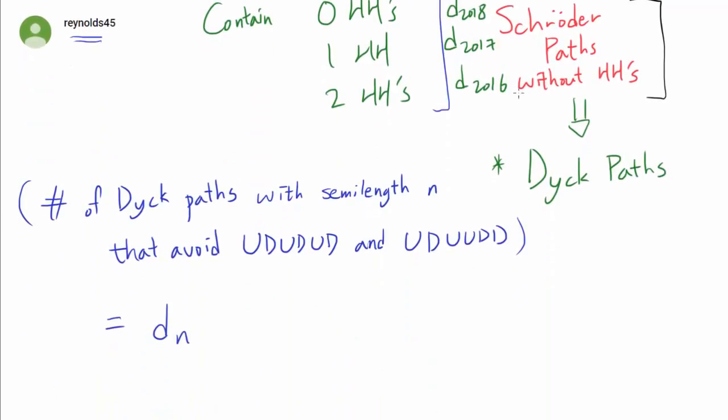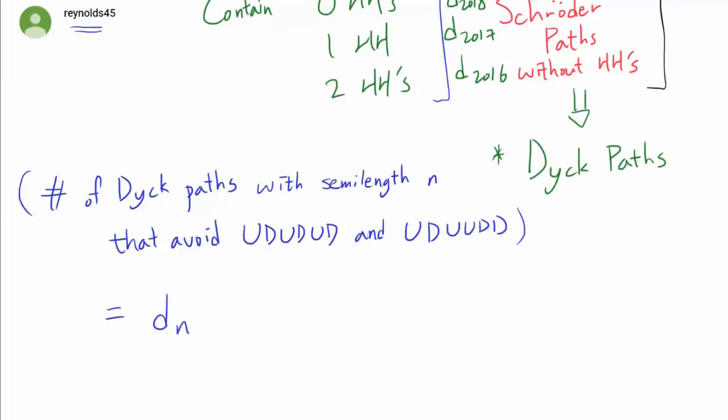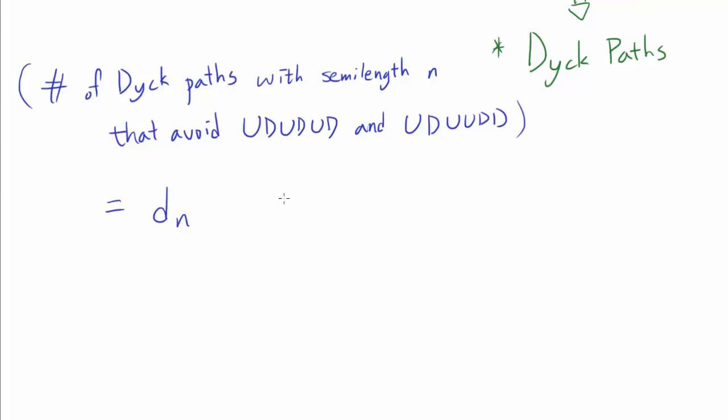But instead of finding D_2016 through D_2018, we will actually find a formula for D_n, which is, as we are about to see, going to be pretty elegant.